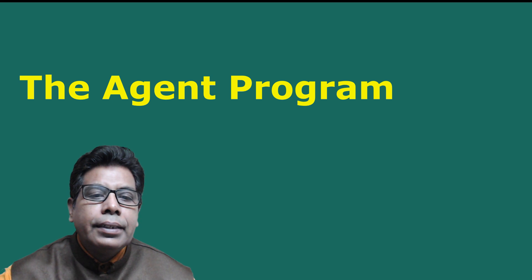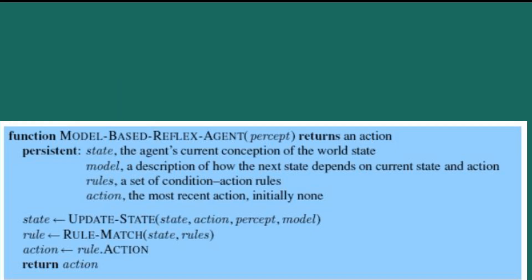The agent program is shown in Figure 2. The interesting part is the function update_state, which is responsible for creating the new internal state description. The function takes the current state, the most recent action, and the model — which is a description of how the next state depends on the current state and action. The function model-based agent takes percepts as a parameter and returns an action based on the updated state and condition-action rules.